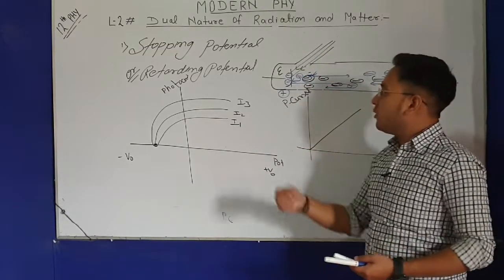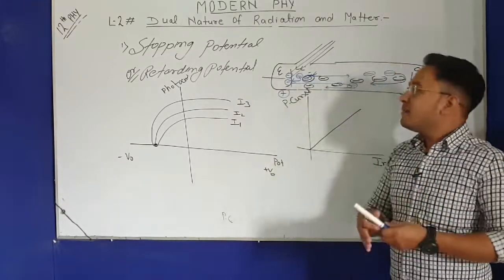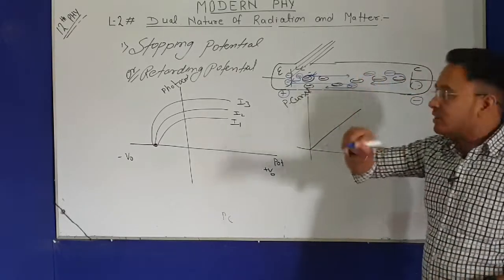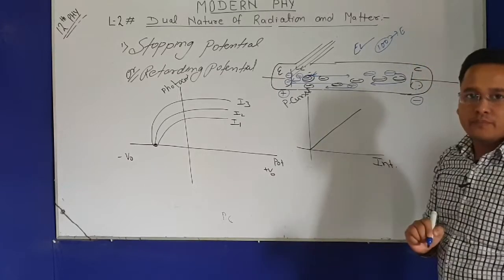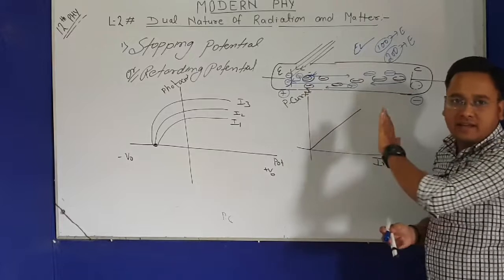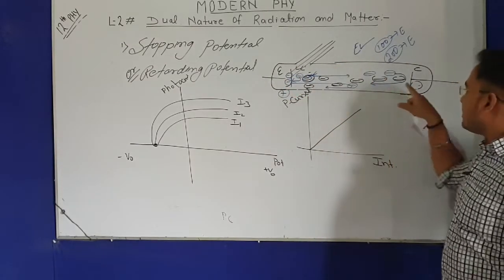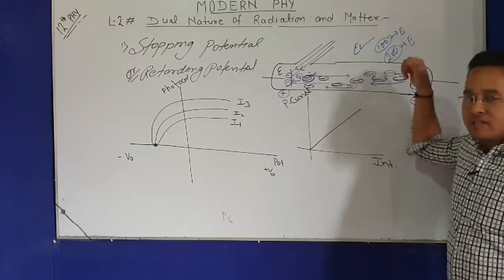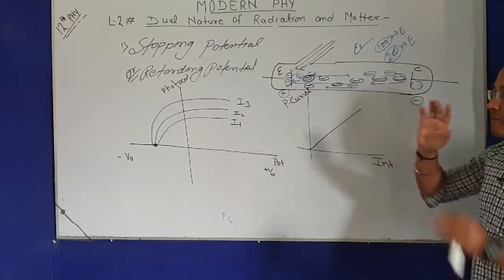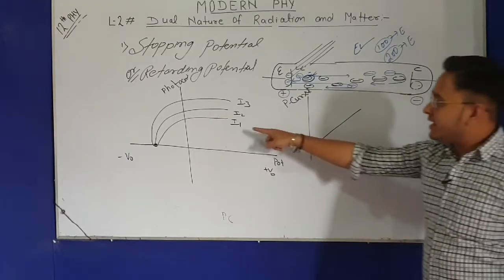When intensity of radiation is increased, the number of electrons emitted increases. Suppose at intensity I1 we had 100 electrons. If I double the intensity, 200 electrons are emitted. But all those electrons have the same energy as before — whether 100 electrons came or 200, each electron's energy is the same. So those 200 electrons will also be repelled at the same potential as the original 100. As intensity increases, photo current increases, but the stopping potential remains the same.